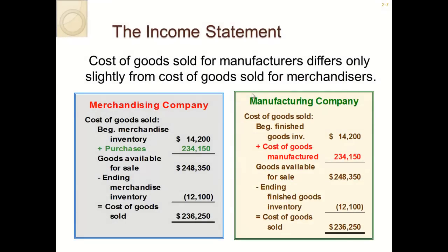When forming the income statement, it differs slightly depending on whether the company is a manufacturer or a merchandiser. A merchandising company is like a retail company — Walmart or a mall store — that is not manufacturing the product but is selling inventory. To find cost of goods sold for a merchandiser, you start with beginning merchandising inventory, add all purchases, which gives you goods available for sale, then subtract ending inventory to get cost of goods sold.